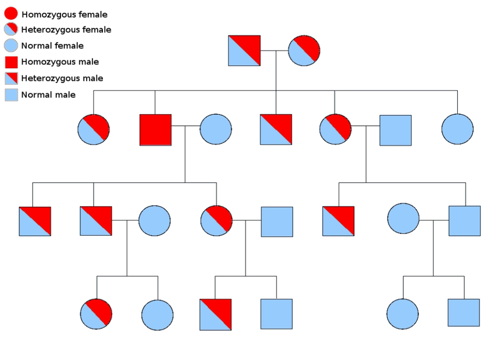Heredity is the passing on of traits from parents to their offspring, either through asexual or sexual reproduction. The offspring cells or organisms acquire the genetic information of their parents. Through heredity, variations between individuals can accumulate and cause species to evolve by natural selection.